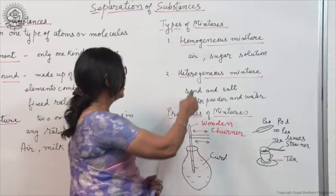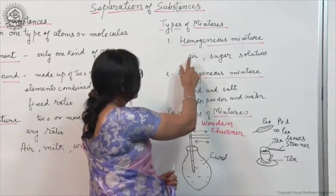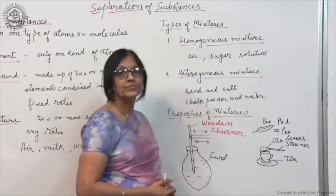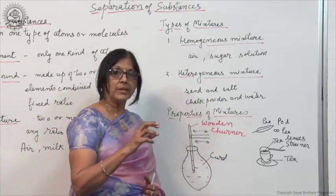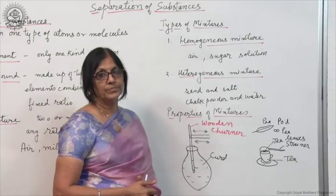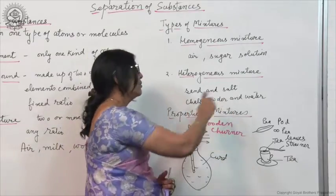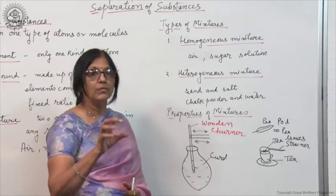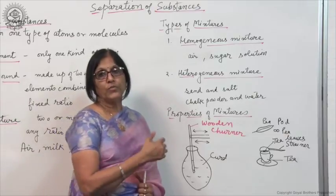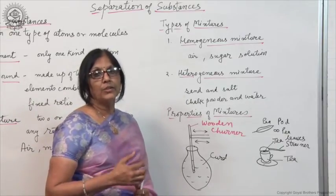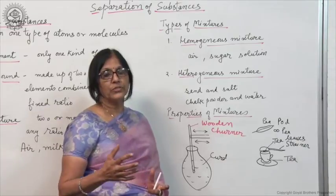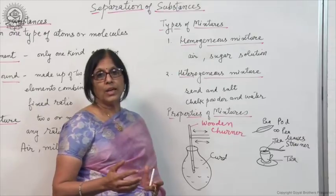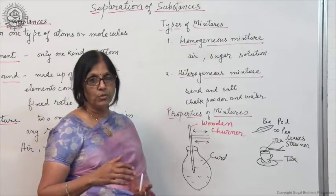If you mix sand and salt, you can see sand separately and salt separately. Or if you mix chalk powder in water, chalk powder will settle down and you can easily see chalk powder and water separately. This forms a heterogeneous mixture. In a heterogeneous mixture, the constituents are not uniformly spread throughout. It does not have a uniform composition throughout its mass.